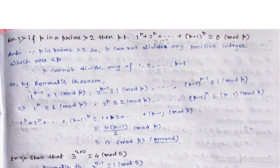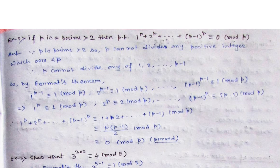If P is prime, it cannot divide any number smaller than P. So P will not divide 1, 2, and all the way up to P minus 1. This is the obvious case. So we can apply Fermat's theorem for all these values: 1 to the power (P minus 1) congruent to 1 under mod P; 2 to the power (P minus 1) congruent to 1 under mod P.